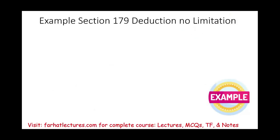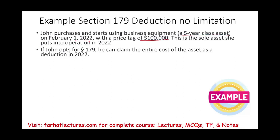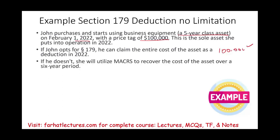Let's look at a simple example with no limitation to illustrate the benefit of Section 179. Assume John purchases and starts using business equipment — a five-year class asset — on February 1st, 2022. John paid $100,000, and this is the only asset he purchased in 2022. John can elect to take this $100,000 as Section 179 and have a 100% deduction for the full amount. Or, John doesn't have to do that — he can depreciate the asset using MACRS and recover his cost over the next six years.